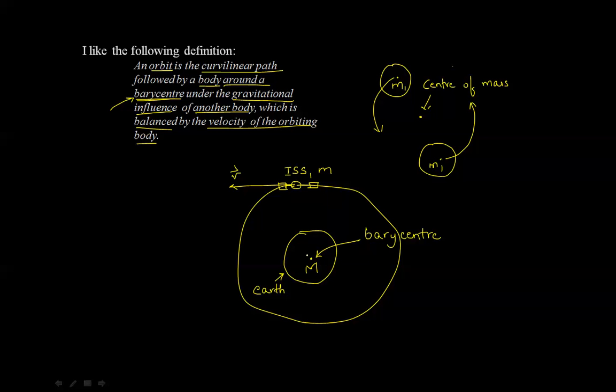Now, why here is the barycenter at the center of the Earth, and why here is the barycenter in the middle of these two bodies? The reason is that the Earth's mass, compared to that of the ISS, is much, much larger than the mass of these two bodies, which I have assumed to be equal.